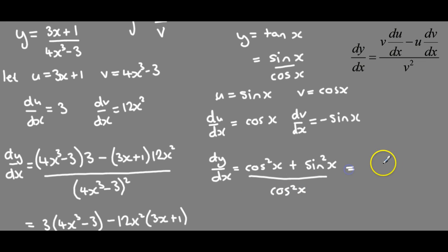So as you can see cos squared x plus sin squared x is 1 and that's over cos squared x. And if you know your reciprocal functions then we can spot that that is sec squared x.